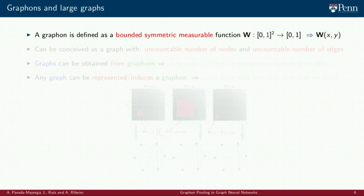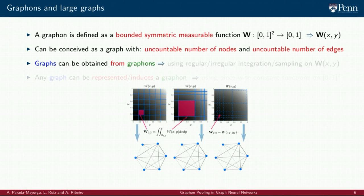Graphons are bounded symmetric measurable functions whose support is on the unit square and whose values lie on the unit interval zero to one. They can be considered as the analog of an adjacency matrix of a graph with an uncountable number of nodes and an uncountable number of edges.